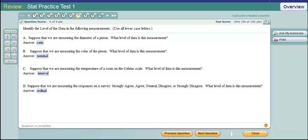Suppose we're measuring the diameter of a piston. What level is this measurement? Well that is ratio. So ratio is the highest level. It has order. It has number. It has differences make sense and ratios make sense. There's a true zero that means nothing. So that's ratio.